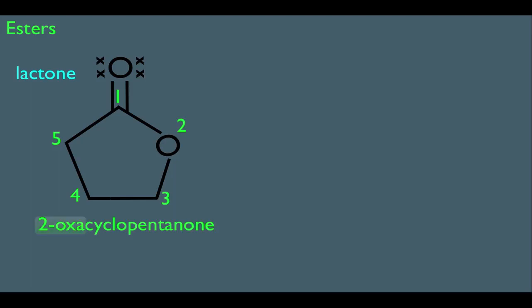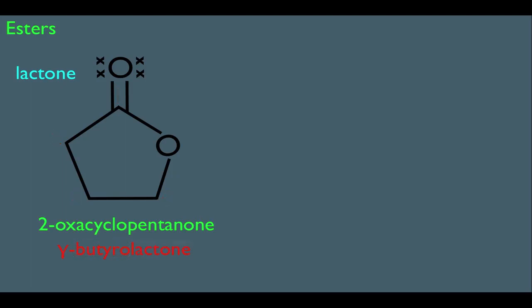The '2-oxa' part calls out the second position in the ring — notice the second position is an oxygen, so we say 2-oxa. All lactones are named using the 2-oxa-one system. The common name of this molecule is gamma-butyrolactone. The 'butyro' part comes from the fact that there are 4 carbons within the ring, and 'lactone' comes from the fact that this molecule is a lactone. The 'gamma' comes from the Greek system: the alpha carbon is next to the carboxylic acid carbon, then beta, then gamma — since the carboxyl oxygen is connected to the gamma carbon, we call that out in the name.